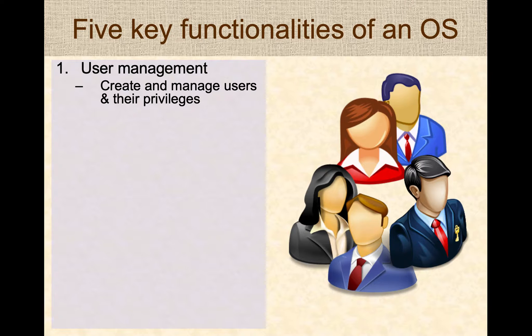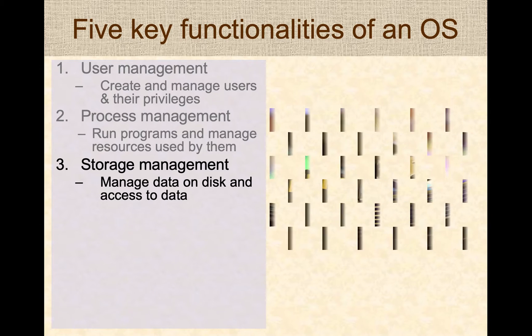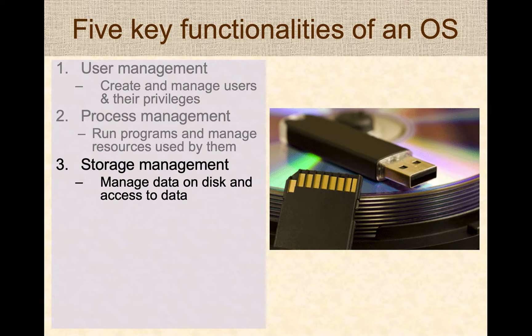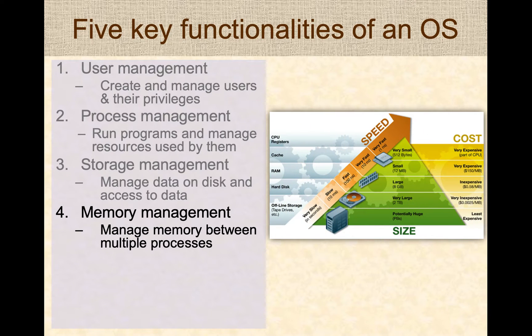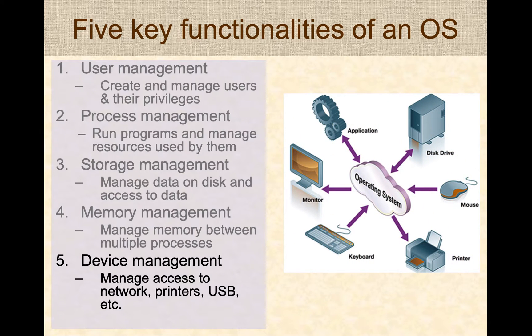The OS performs five key functionalities. It manages users. It does process management — that is, running programs and managing the resources consumed by them. It also does storage management in terms of managing files and data on disk. It does memory management, with memory being a key resource. And it also manages devices and other input-output operations. All application programs need to interact with the operating system in order to interface with any of these resources.